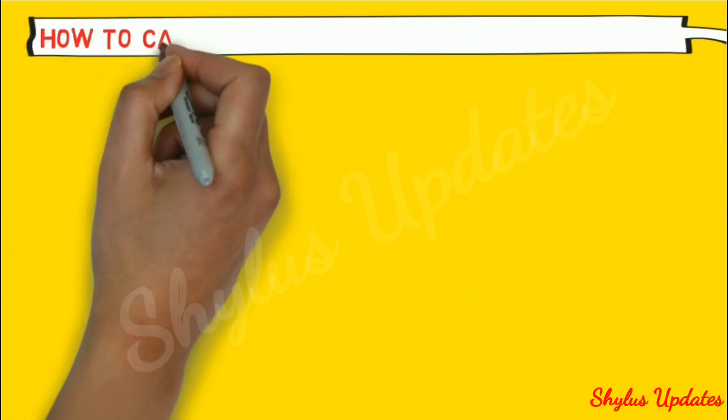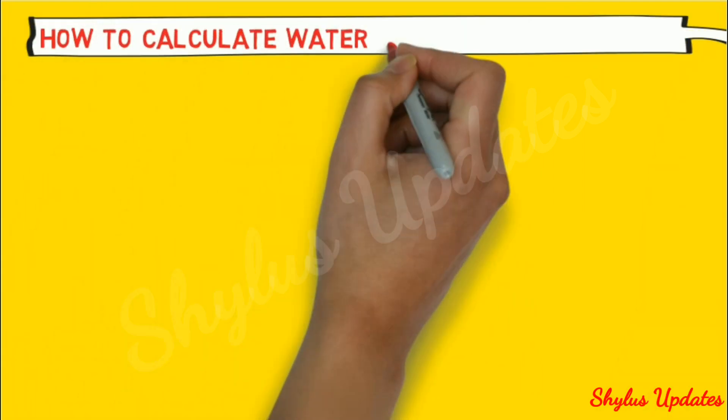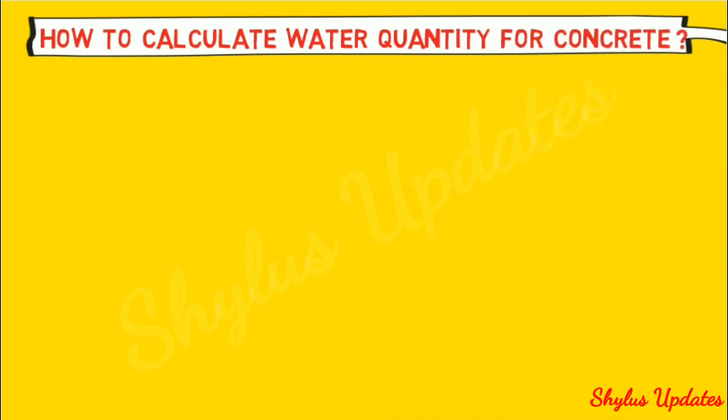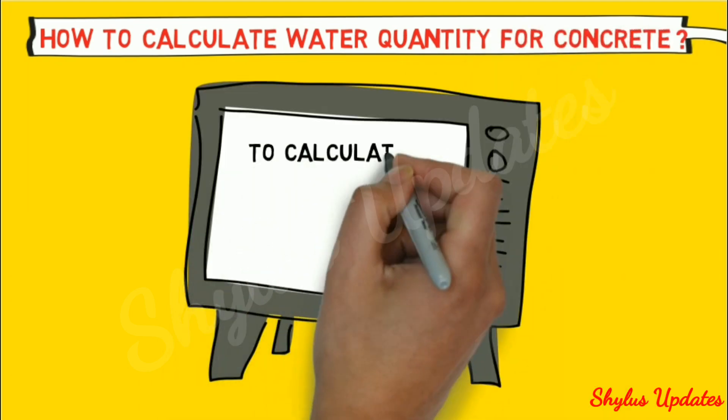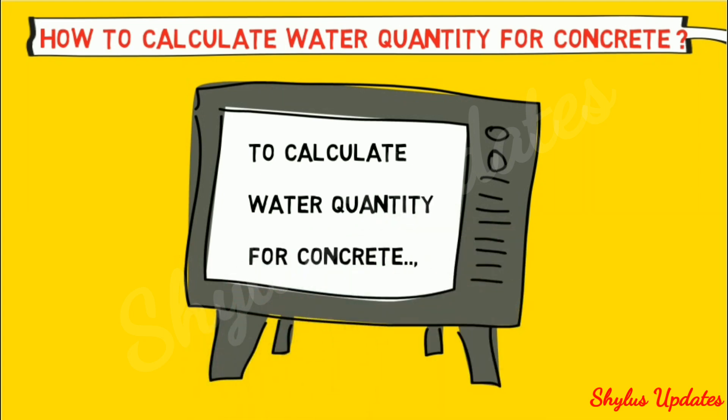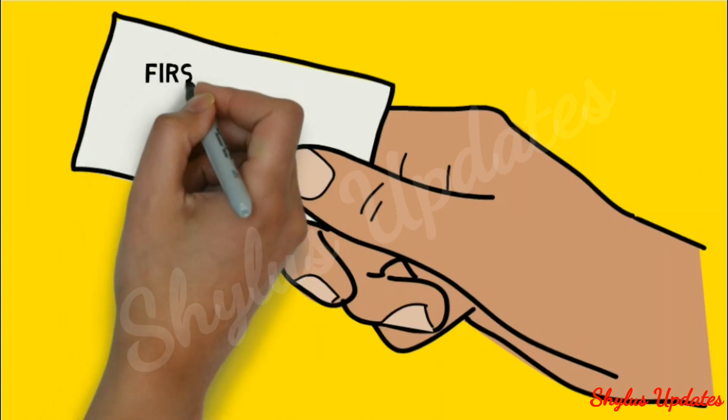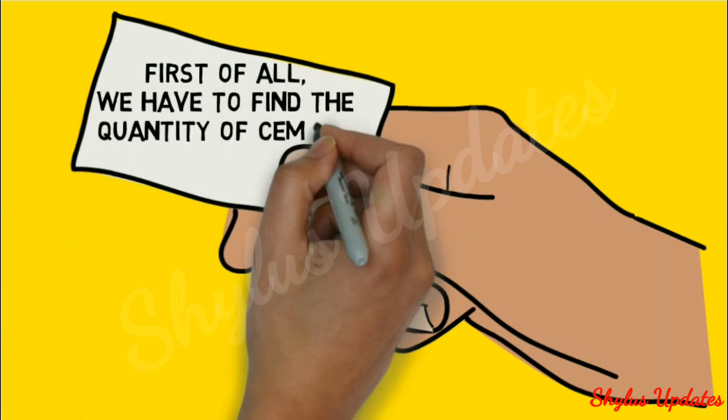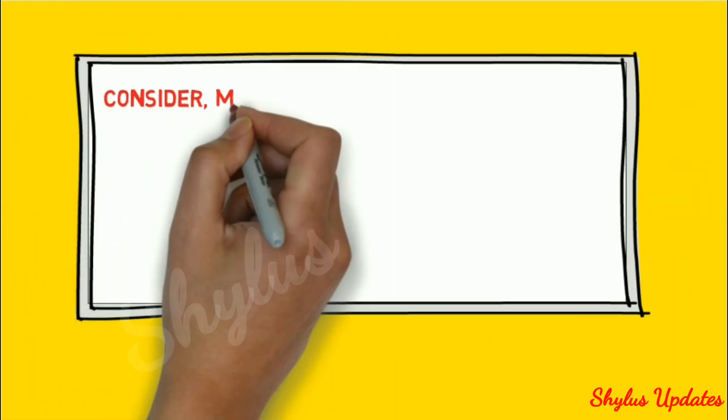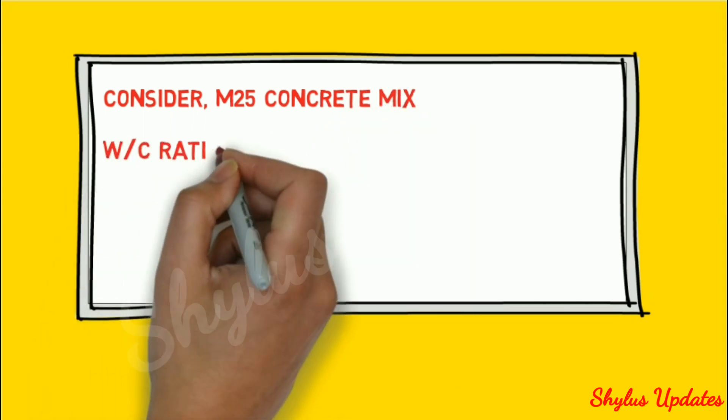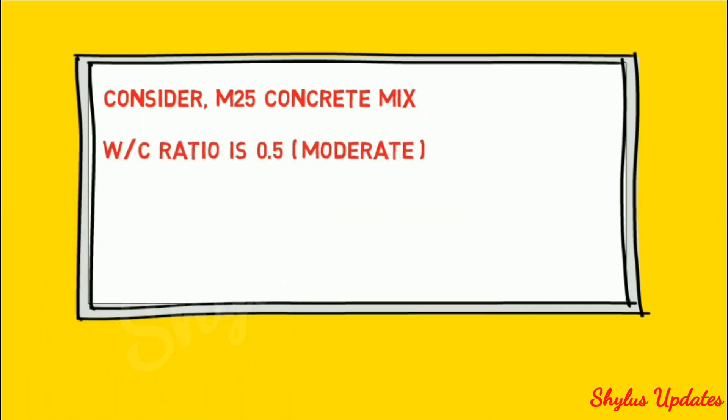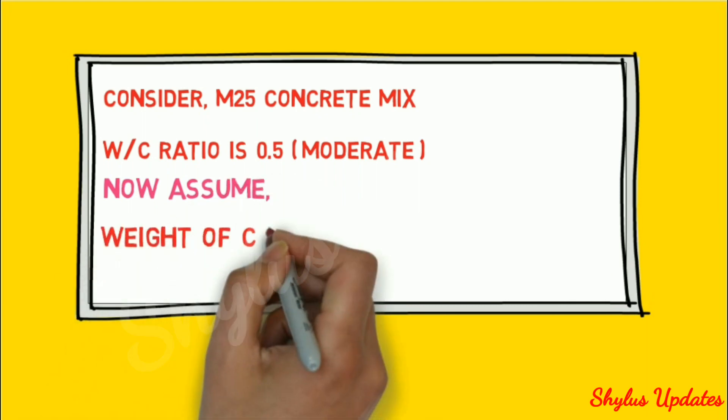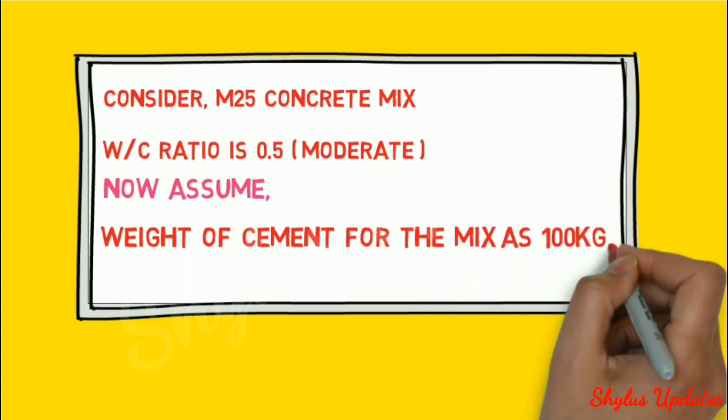How to calculate water quantity for concrete? First of all, we have to find the quantity of cement. Consider M25 concrete mix. Water-cement ratio is 0.5. Now assume weight of cement for the mix as 100 kg.